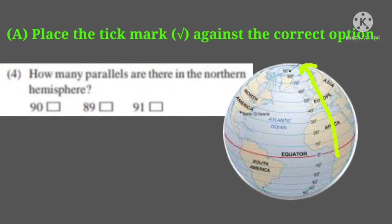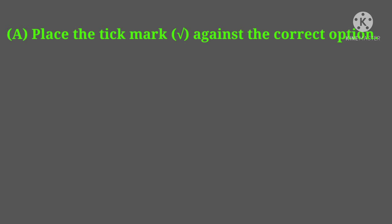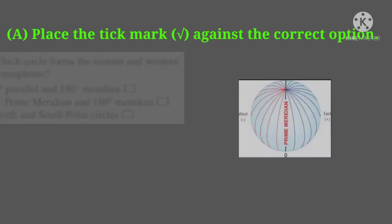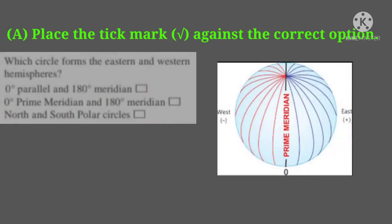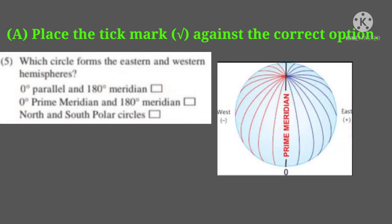Fourth one: how many parallels are there in the northern hemisphere? Options are 90, 89, and 91. The correct answer is 90.